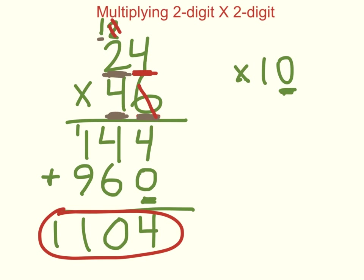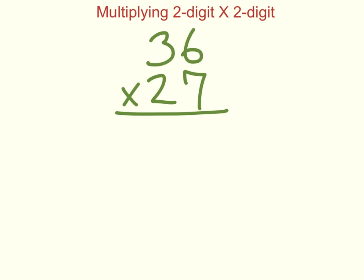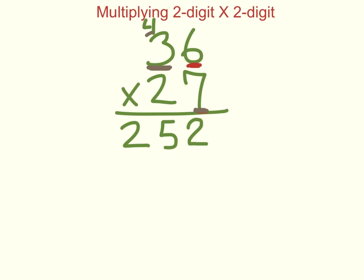Let's do another example together: 36 times 27. Remember, you always start with the ones place value digit on the bottom number. So I'm going to start by going seven times six. Seven times six is 42, so I put my two here and carry my four, placing it above the next number. Now I multiply this seven times this three. Seven times three is 21, plus the four makes 25.